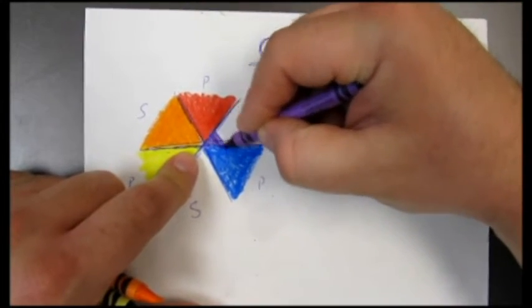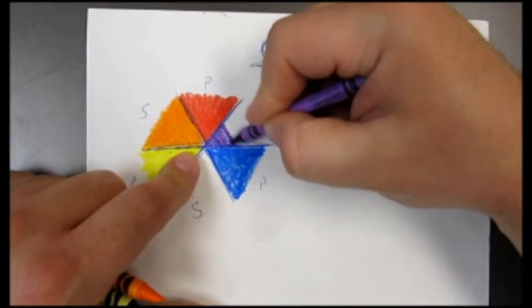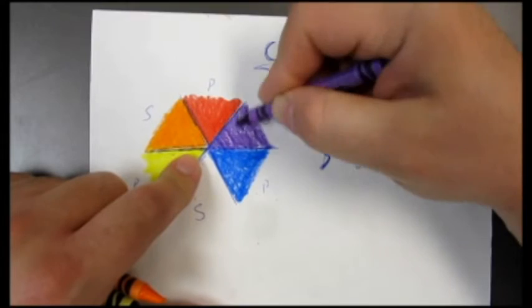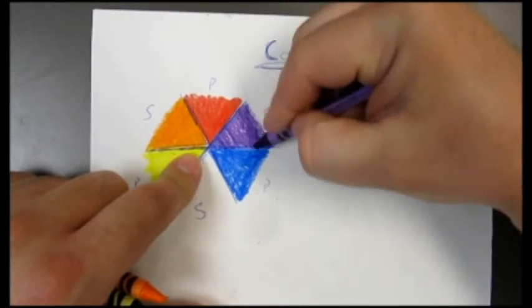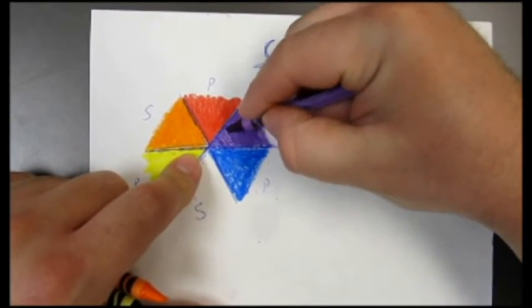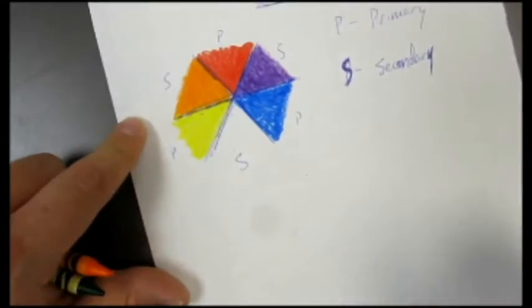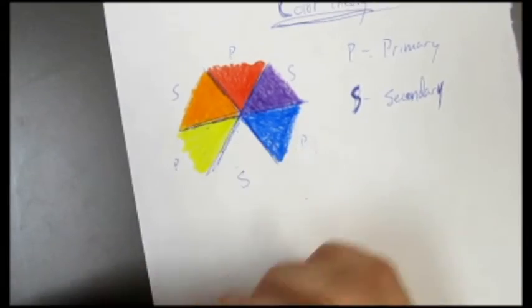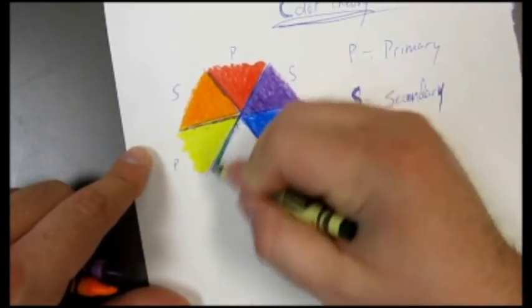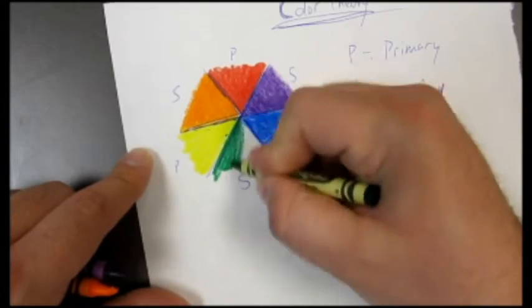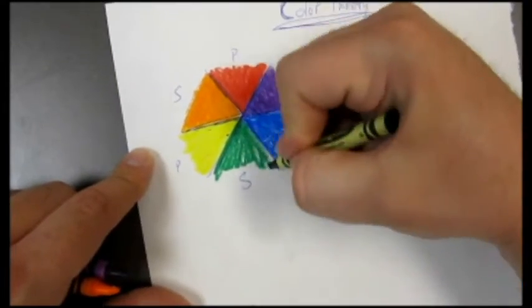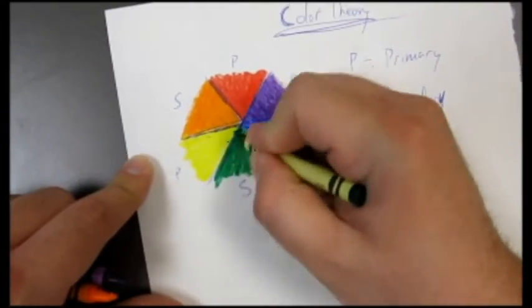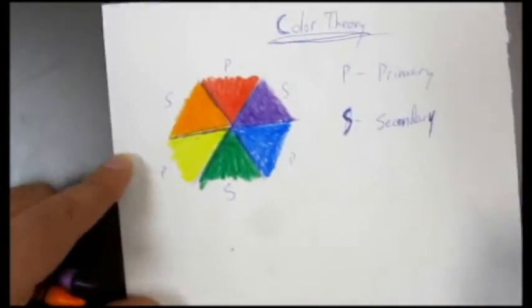For those of you aficionados out there that call this violet, I'm a man, I say purple, I don't say violet. So nice, rich purple hue covering that space. Last one, got a little bit of yellow, got a little bit of blue, mix them together you get green. This is all that basic stuff they should have taught you in elementary school. In case they didn't, you're learning it right now.